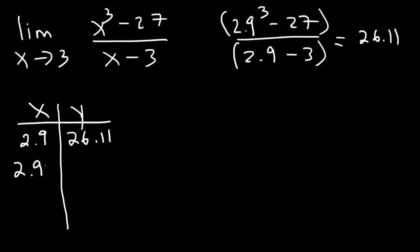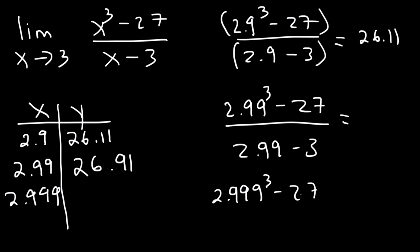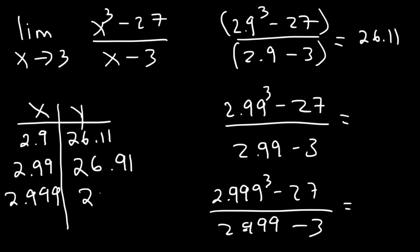Now what about when x gets closer to 3? Let's try 2.99 and see if it converges to a specific value. This will give you 26.91. And if we try 2.999, by now you can see the answer — this is going to be 26.99.